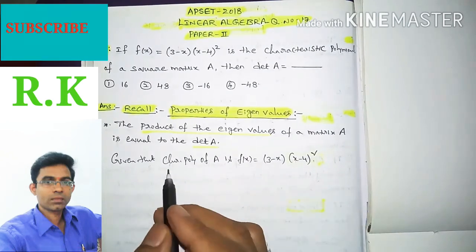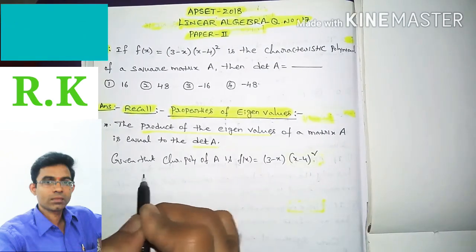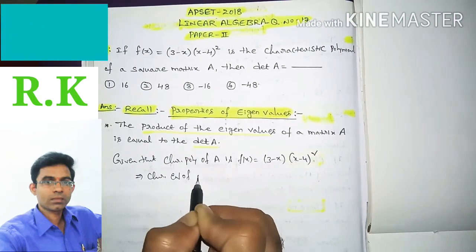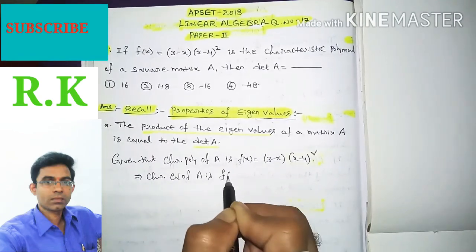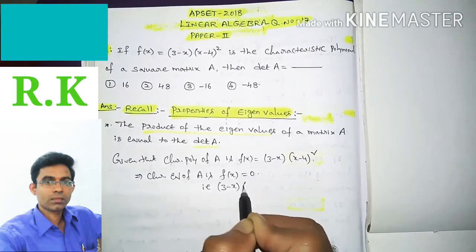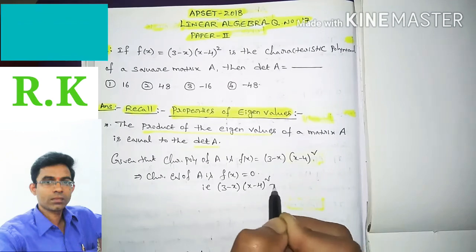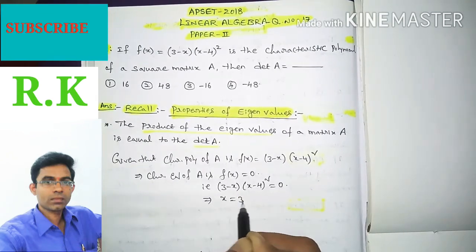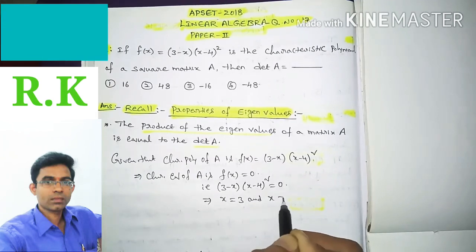The characteristic equation of A is given by f(x) = 0, that is (3 - x)(x - 4)² = 0. From this we get x = 3 and x = 4, 4.